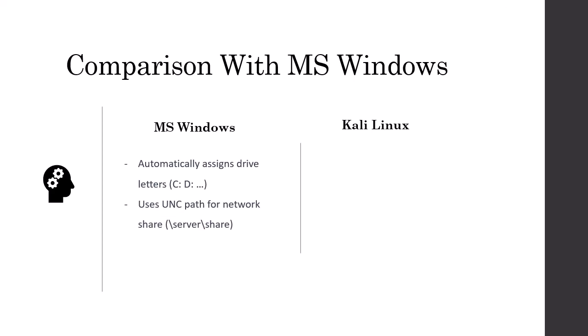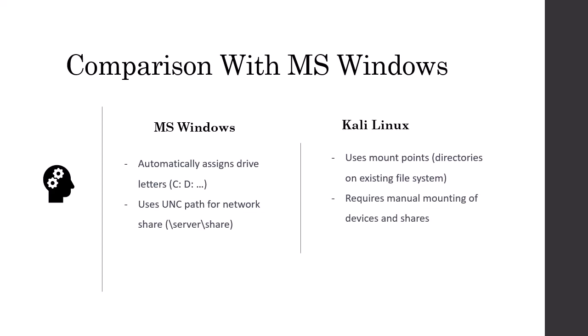Now in Linux, things work a bit differently. Instead of drive letters, Linux uses mount points, which are simply directories. When connecting a storage device or accessing a network share, you need to mount it to an empty directory. This links the device or network share to your system directory tree, allowing you to access its files as if they were part of your local file system.